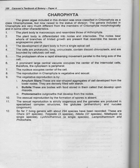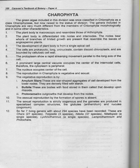The genera of Charophyta are: Chara with 27 species, Tolypella with 3 species, Nitella with 37 species, Nitellopsis with a single species, Lychnothamnus with a single species, Lamprothamnium, and Protochara. So students, the Charophyta topic is complete. If you have any difficulty, you can ask your questions in the comment section. Thank you.